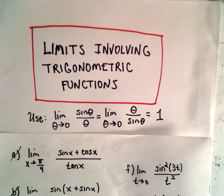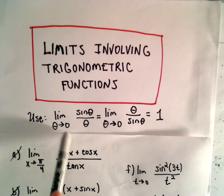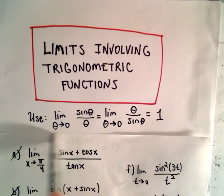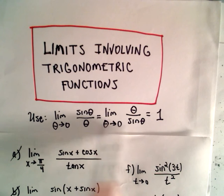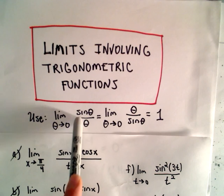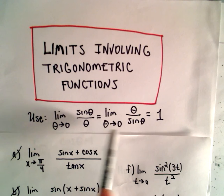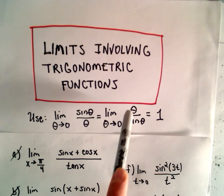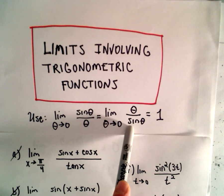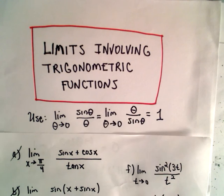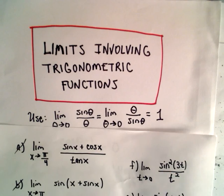So now I'm going to do three more examples of limits involving trig functions, and at a glance it looks like all of these examples are going to make use of these first two limits. The limit as theta approaches 0 of sine theta over theta is the same thing as the limit as theta approaches 0 of theta over sine theta. They both equal 1.